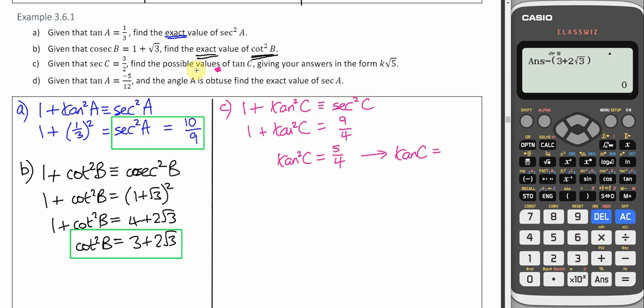Therefore, we need to square root both sides to get tan C. You must remember plus or minus when we're square rooting. Give your answers in the form K root 5. Well, that is in that form.